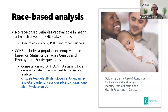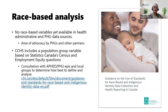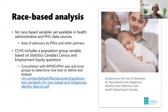The CCHS includes a population group variable based on Statistics Canada's census and employment equity questions. Before using it, we would like to consult with colleagues at AFIO and local groups to determine how best to define and analyze this going forward. A specific challenge in the Southeastern region is that when calculating race-based metrics, cell sizes — the numerator and denominator — will be small, even when aggregating up to the Southeastern region, making metrics unstable, unusable, and potentially identifiable.